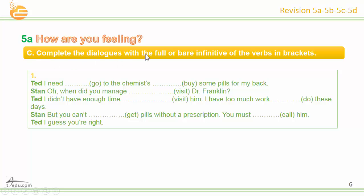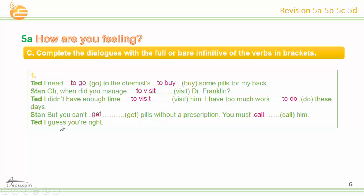Complete the dialogues with the full or bare infinitives of the verbs in brackets. Number four: I need to go to the chemist to buy some pills. Oh, when did you manage to visit Dr. Franklin? I didn't have enough time to visit him — I have too much work to do these days. But you can't get pills without a prescription. You must call him. I guess you're right.